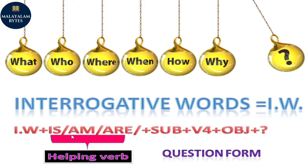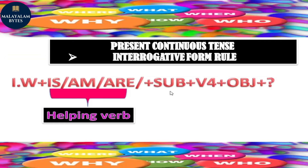The rule is: interrogative words plus helping verb (is, am, or are) plus subject plus fourth form of the verb plus object plus question mark. The interrogative words include: when, why, how, who. So the structure is: interrogative word plus is/am/are plus subject plus fourth form of the verb plus object plus question mark.